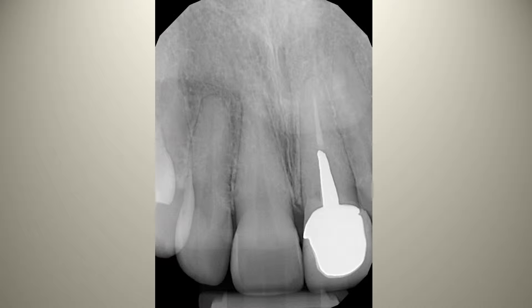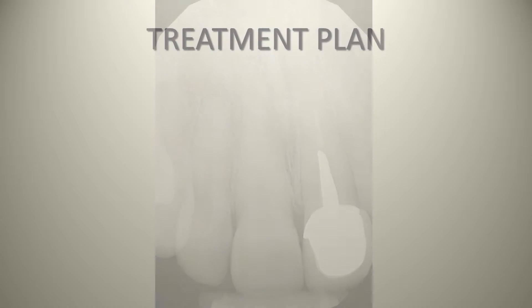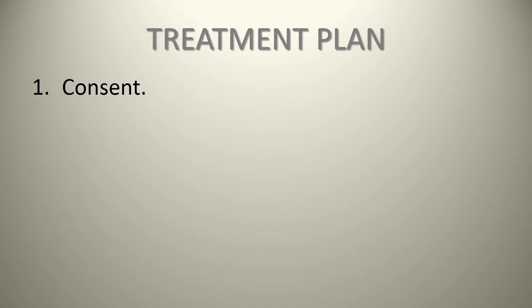However, clinically there was a fairly significant carious lesion and fracture which was evident. So the treatment plan for this patient consists of getting consent from this patient. In the consent process, we discuss what the diagnosis for this patient is. This is a failed tooth which unfortunately is going to require extraction due to a vertical fracture inside the tooth and the fact that the post-core crown complex is no longer being retained.